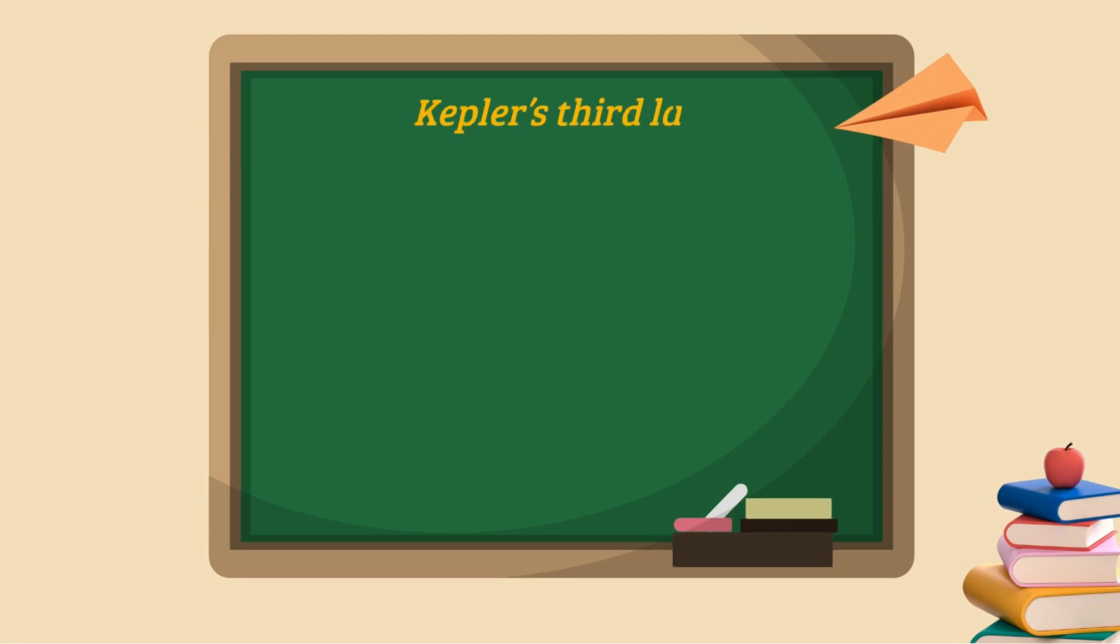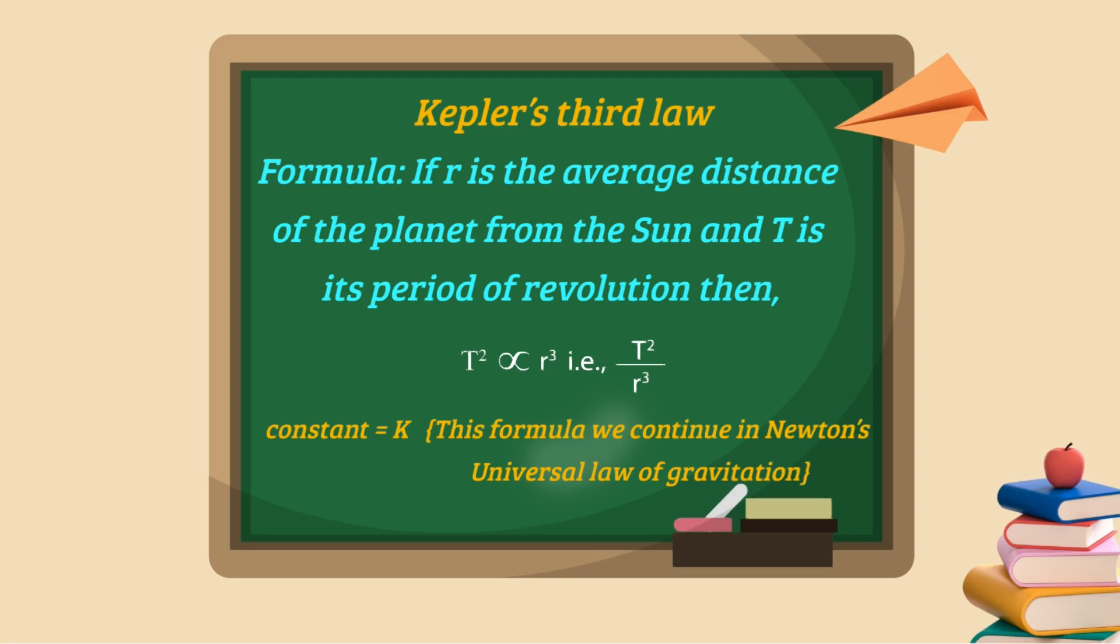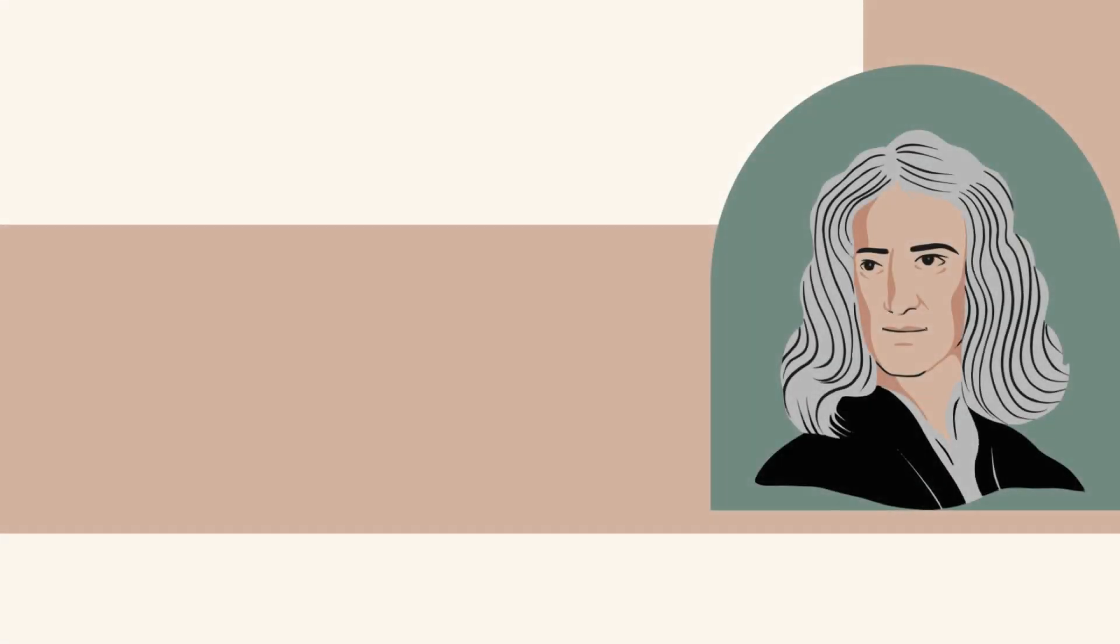Talking more about Kepler's third law, it can be written in a formula which states: If r is the average distance of the planet from the sun and T is its period of revolution, then T squared is directly proportional to r cubed, that is T² ∝ r³. Let us put K as a constant. With this formula we continue to Newton's universal law of gravitation.